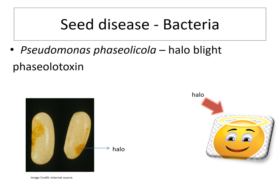Seed disease caused by bacteria: the example is the bean crop host, which can be attacked by the pathogen Pseudomonas fasciolicola, causing halo blight of beans. The symptoms are black or brown necrotic spots surrounded by yellow haloes, which are yellow chlorotic tissue. During the formation of these halo lesions, a bacterial toxin called fasciolotoxin is produced.